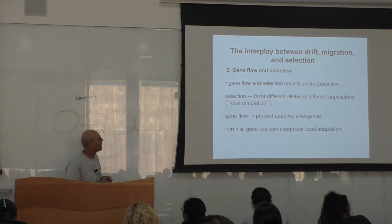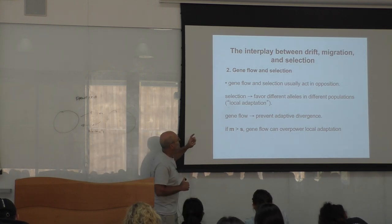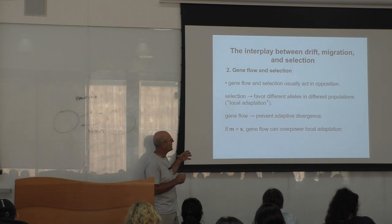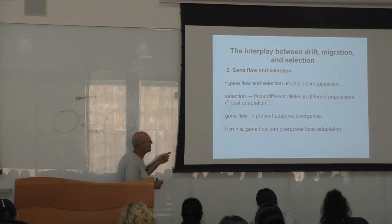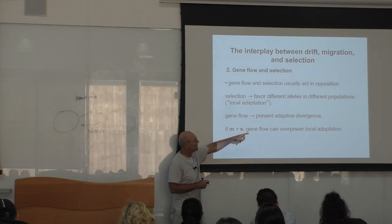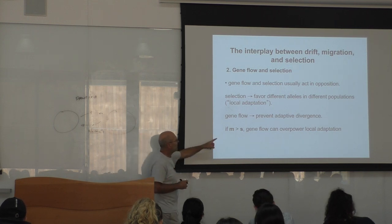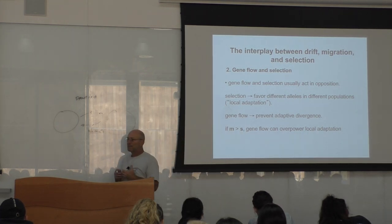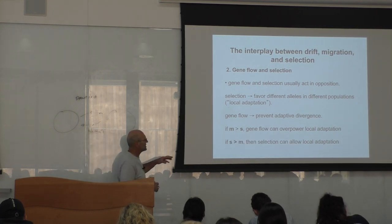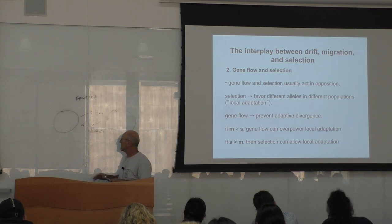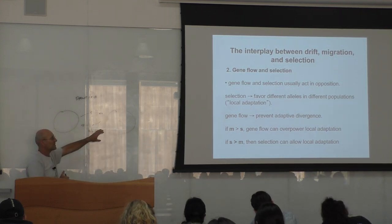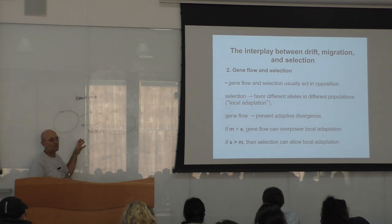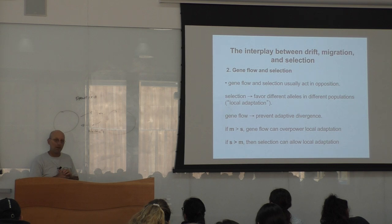Gene flow and selection usually act in opposition, because selection favors different alleles in different populations due to local adaptation and directional selection. Gene flow prevents adaptive divergence. If the migration rate m is stronger than selective pressure, gene flow overpowers local adaptation and populations cannot locally adapt. If selection is very strong, populations can locally adapt. So if two populations are in very different environments: with a lot of gene flow they cannot adapt locally; with little migration, they can adapt to their local environment.